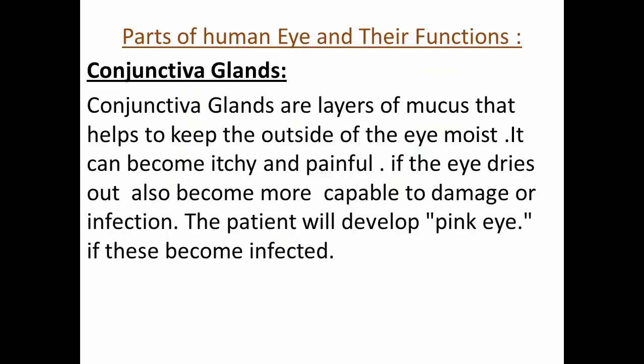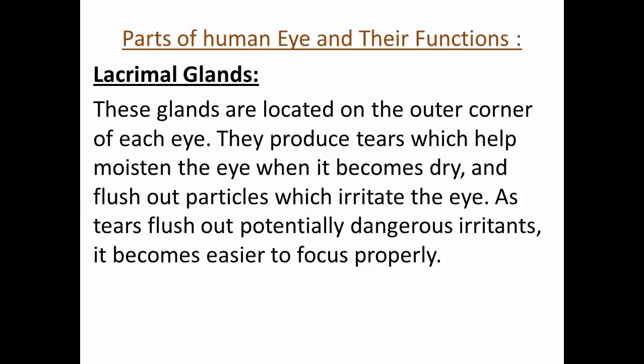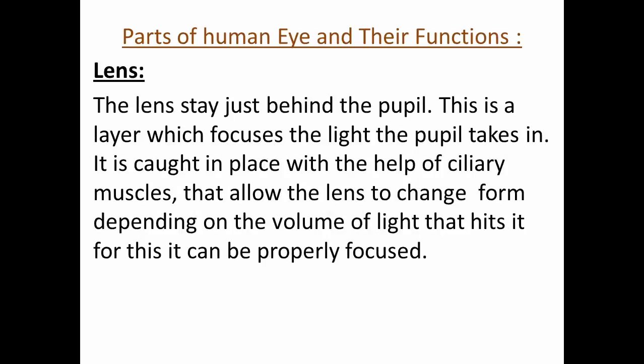Conjunctiva glands. Conjunctiva glands are layers of mucus that help to keep the outside of the eye moist. The eye can become itchy and painful if it dries out, and also becomes more susceptible to damage or infection. The patient will develop pink eye if these become infected. Lacrimal glands. These glands are located on the outer corner of each eye. They produce tears which help moisten the eye when it becomes dry, and flush out particles which irritate the eye. As tears flush out potentially dangerous irritants, it becomes easier to focus properly.